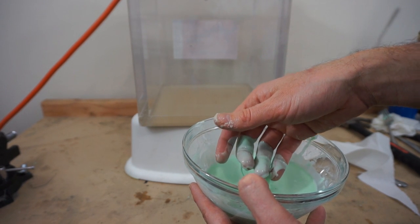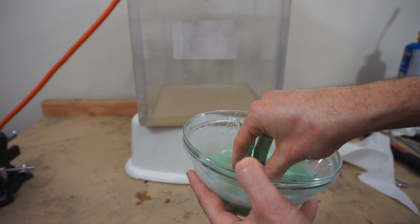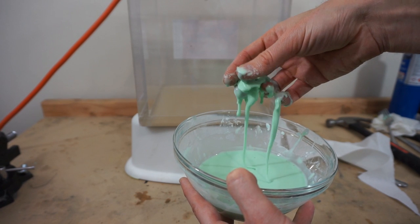Ketchup is a non-Newtonian fluid, toothpaste, and many other normal fluids we use in our everyday life is non-Newtonian. But Oobleck is the funnest to play with.